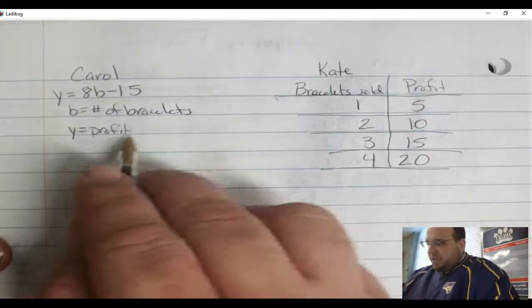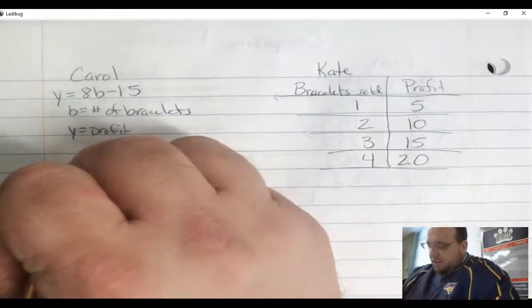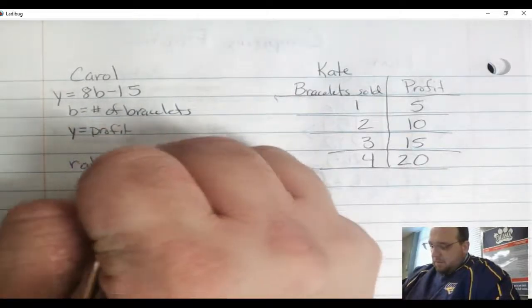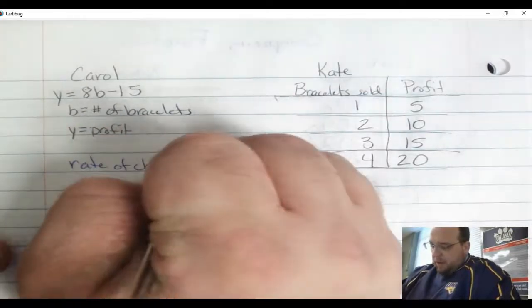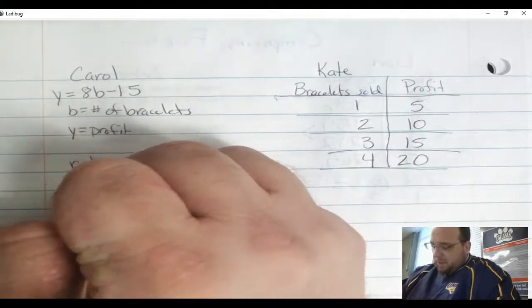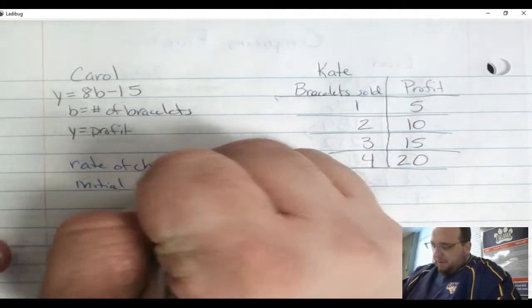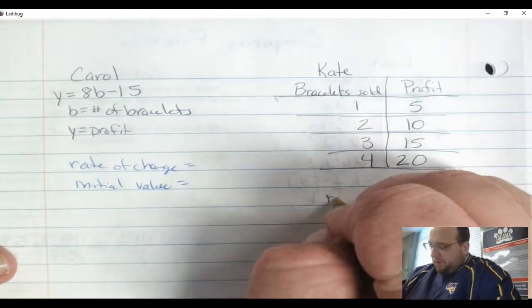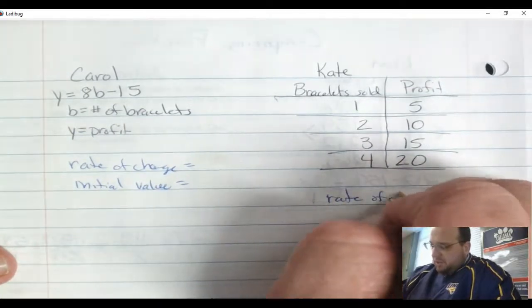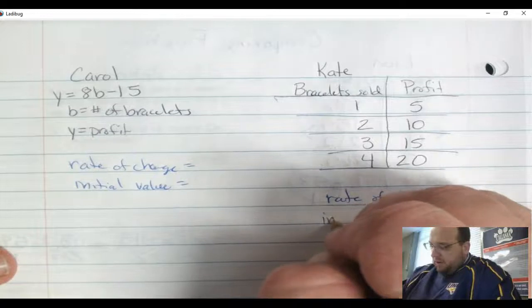What I want to do with the equation and the table is find the rate of change and the initial values. This will tell me some information. So I want to find both from each of these - the rate of change and the initial value.